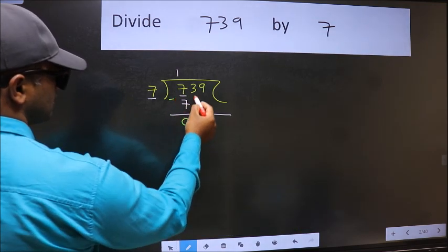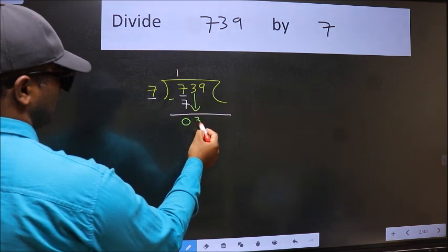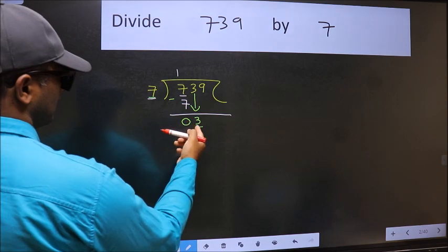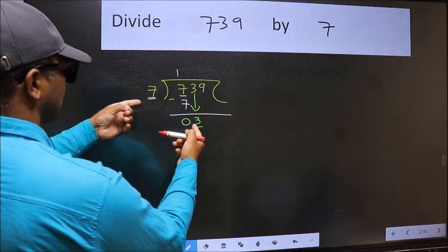After this, bring down the beside number. So 3 down. Now here we have 3 and here 7. 3 is smaller than 7.